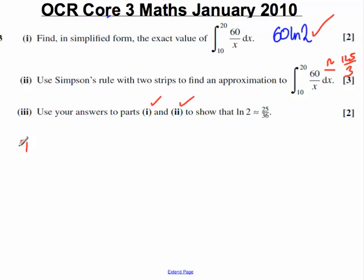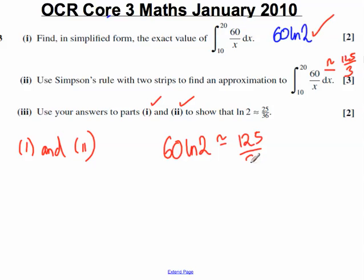So therefore, from part I and II we can say the following, that 60 ln 2 is approximately equal to 125 over 3.